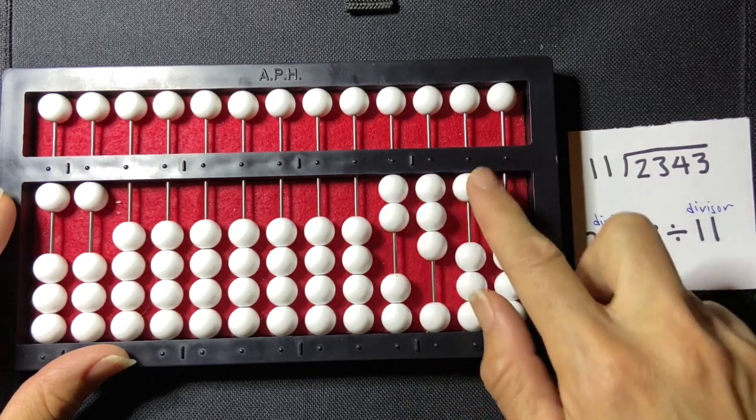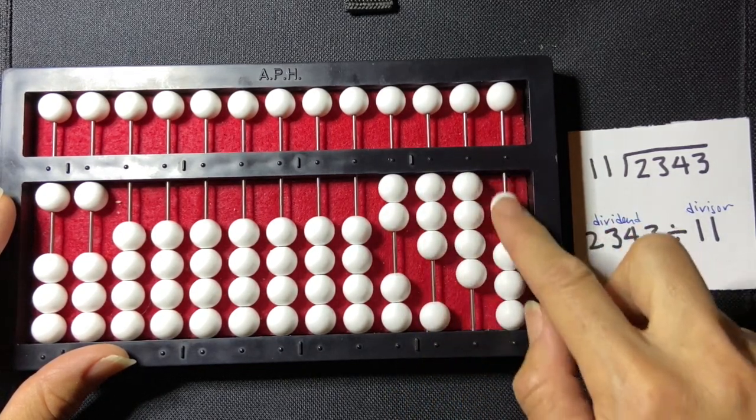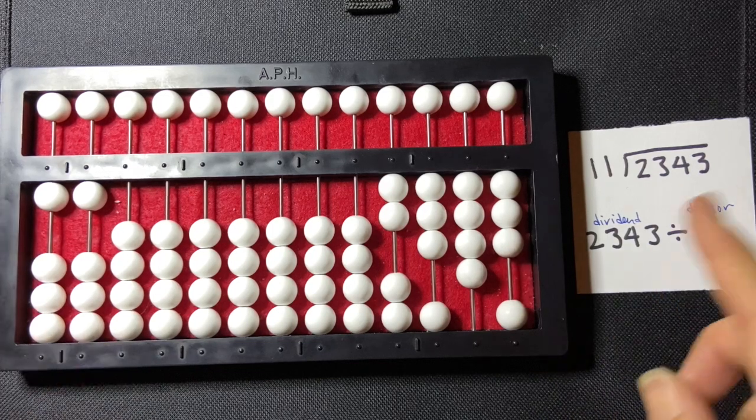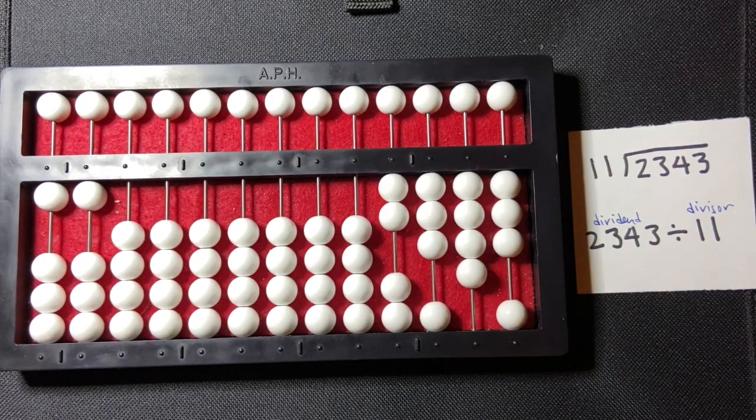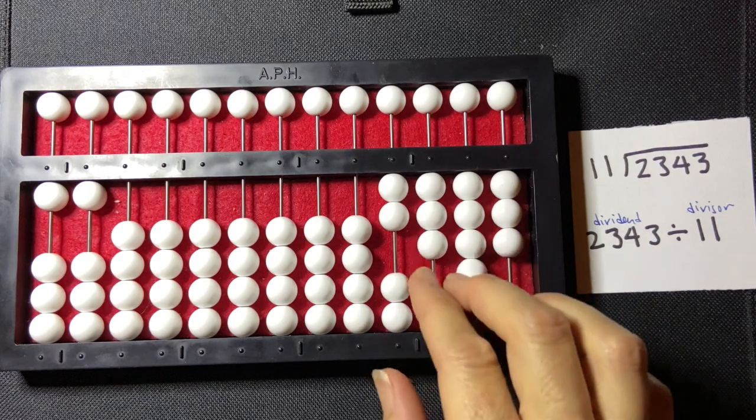2,343, on the far right-hand side of my abacus. So 1, 2, 1, 2, 3, 1, 2, 3, 4, and 1, 2, 3. And I'm going to start by comparing my divisor to my dividend.